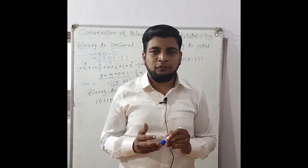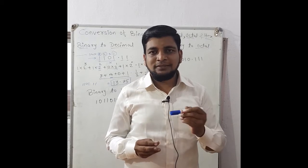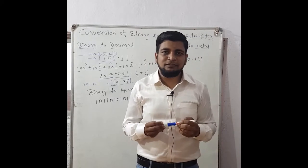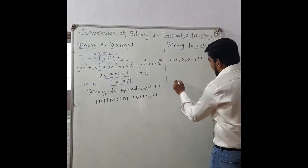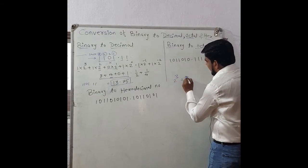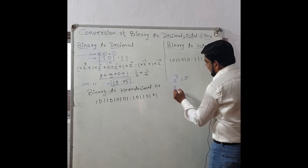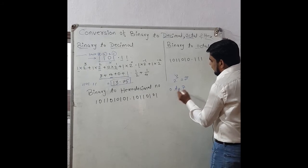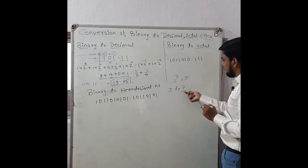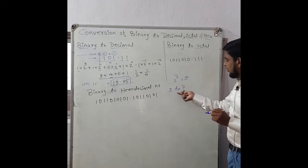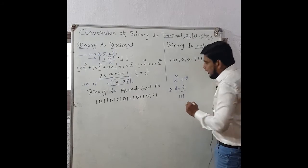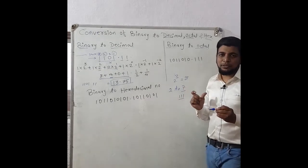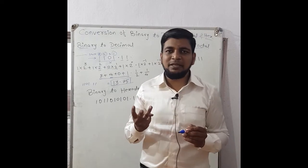For representation of any octal number in its binary equivalent, how many bits are required? Three bits are required, because 2 raise to 3 equals 8, and octal representation has 8 possible combinations from 0 to 7. The maximum octal number is 7, whose binary equivalent is 1 1 1 — three bits are required to represent each octal digit.